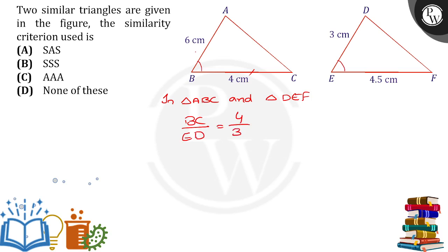Now, if I take another side that is BA, BA by - now I have to take EF. BA is 6 by EF is 4.5. Now you will understand, 1.5 cancels 6 for 4 times, 4.5 cancel by 1.5 for 3 times, so 4 by 3.